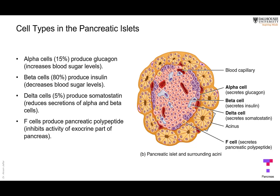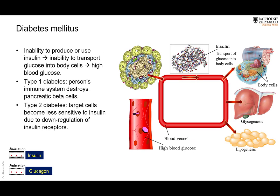Within the pancreatic islets of Langerhans there are four types of cells. The predominant type is the beta cells, which produce insulin. Then we have the alpha cells, which produce glucagon — insulin and glucagon have opposing functions. We also have the delta cells, which produce somatostatin, and this reduces the secretion of both alpha and beta cells. Don't mix between somatostatin and somatotropin — somatotropin is the growth hormone, not produced by the pancreas.